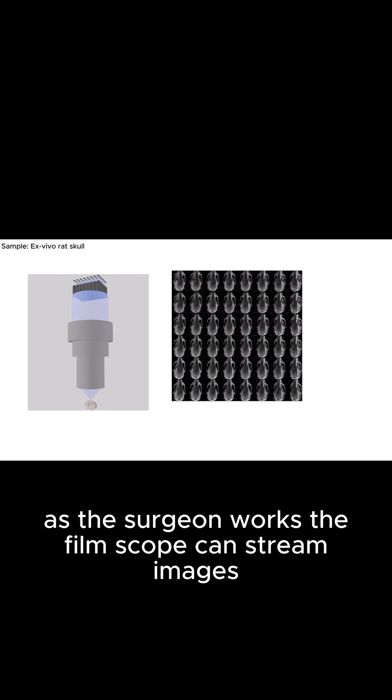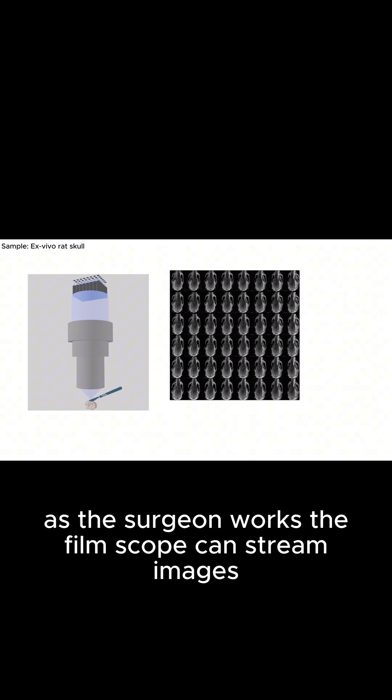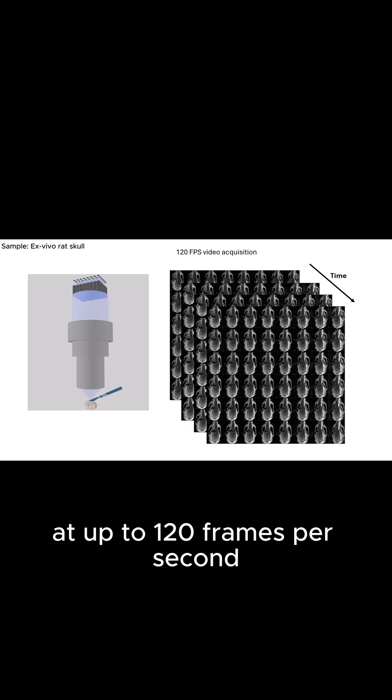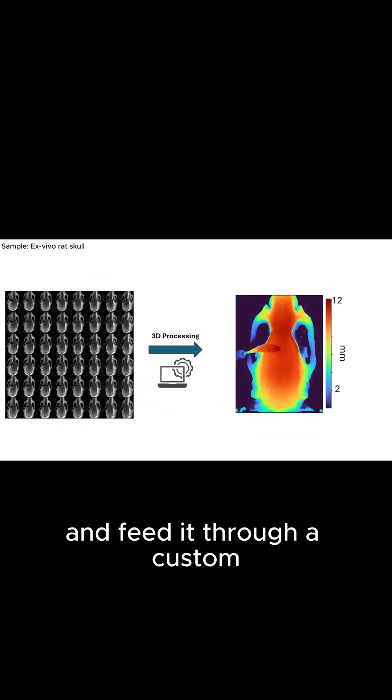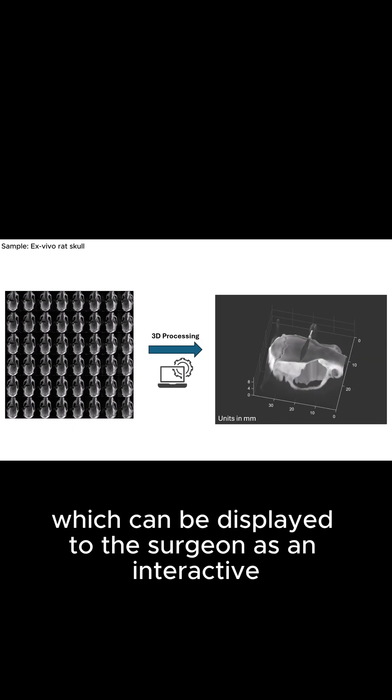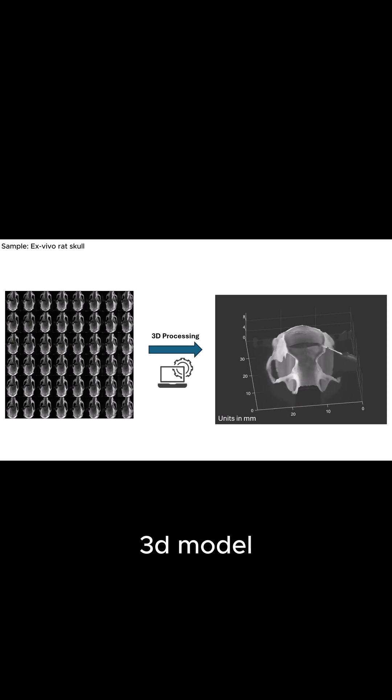As the surgeon works, the film scope can stream images at up to 120 frames per second. We can take a single snapshot from the system and feed it through a custom 3D reconstruction algorithm to produce a detailed depth map, which can be displayed to the surgeon as an interactive 3D model.